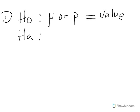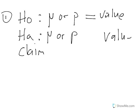The alternative is what you, the statistician, are trying to prove — your claim. Again, you'll use the same population parameters, mu or p. And the value does not change. So whatever the value is for your null hypothesis is also the value for your alternative.